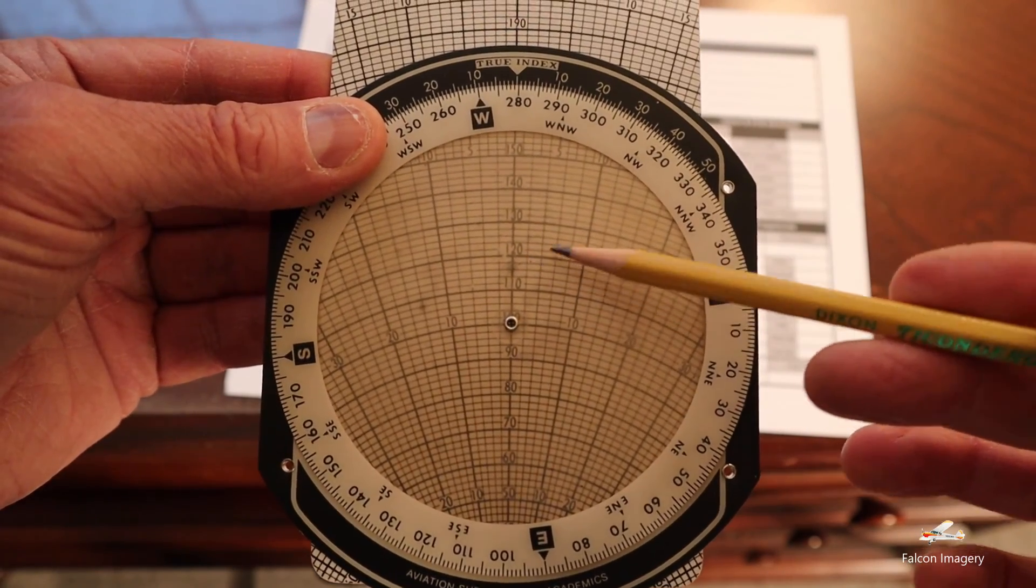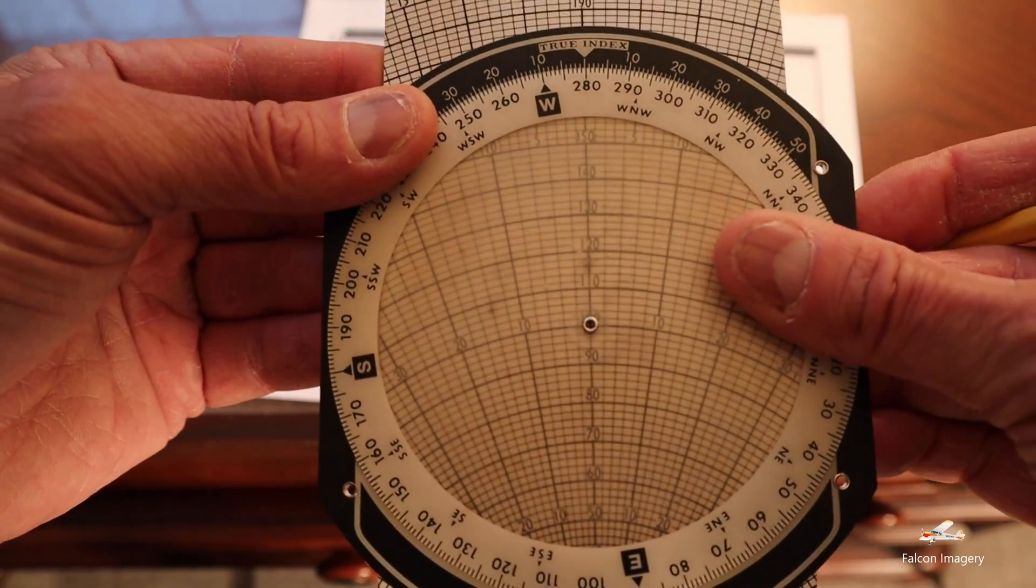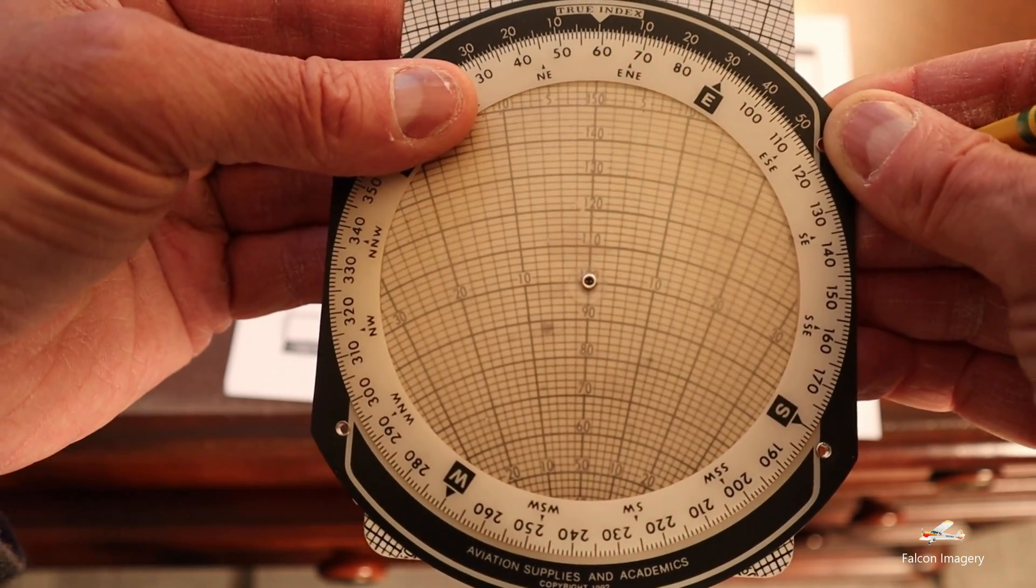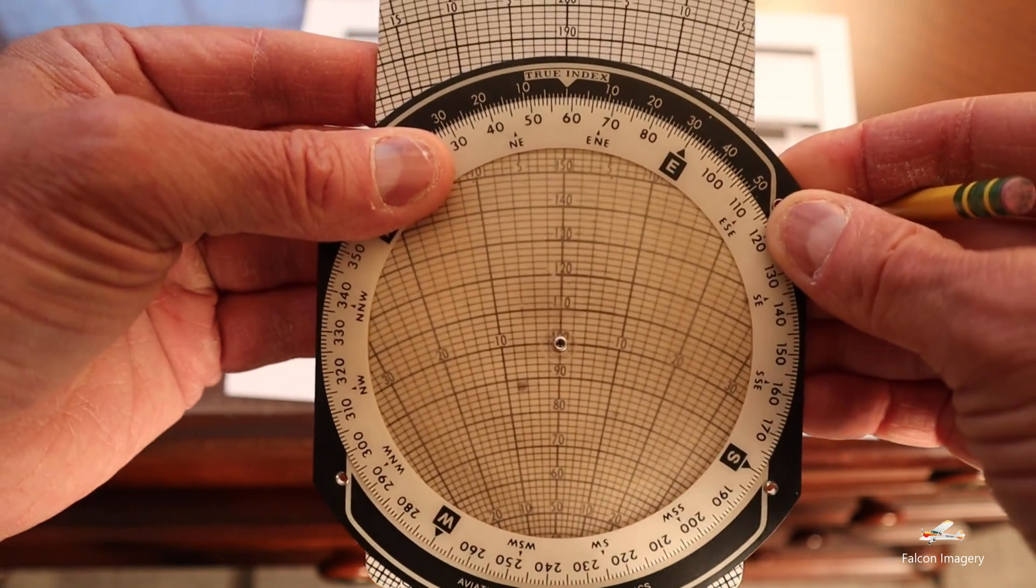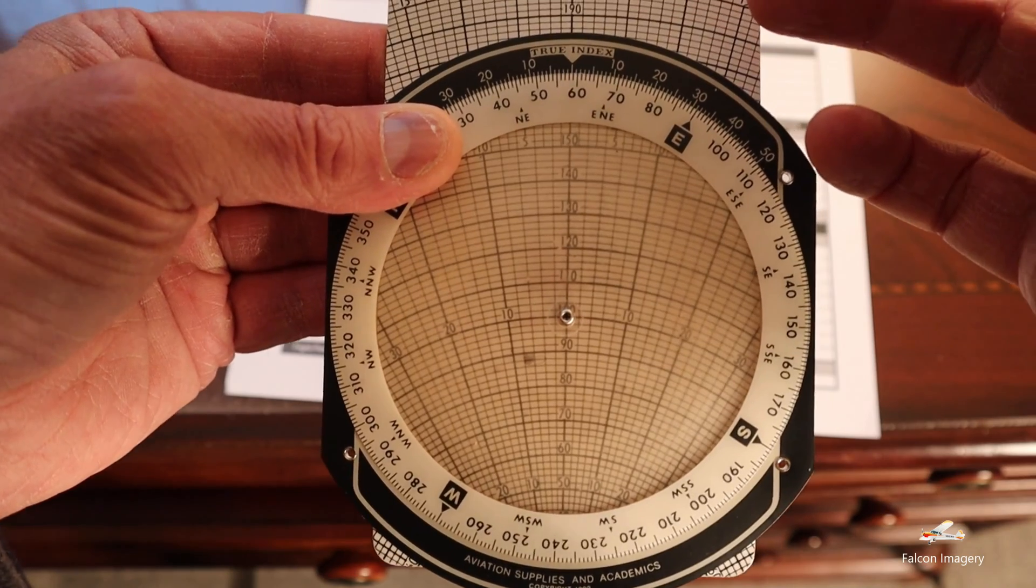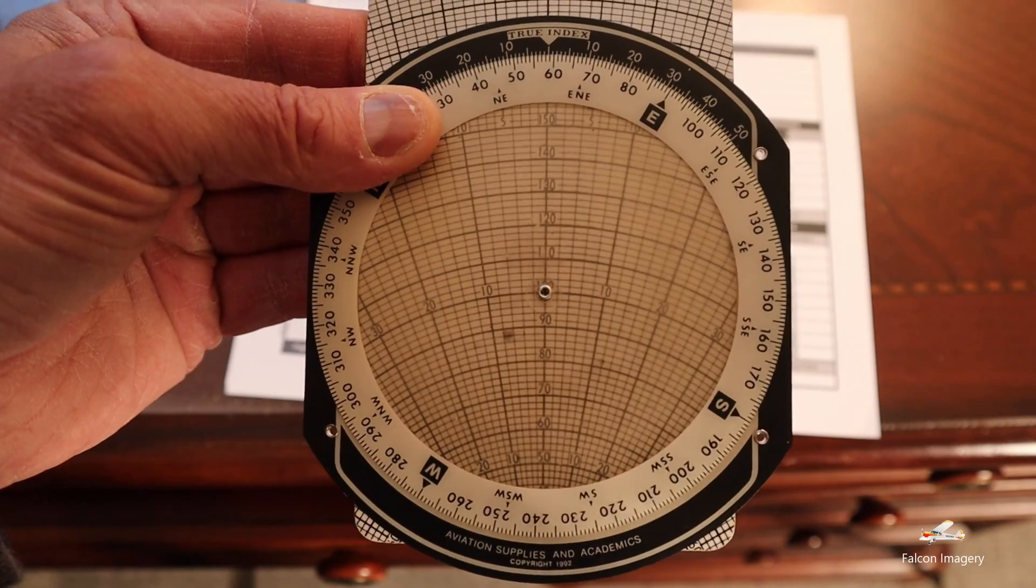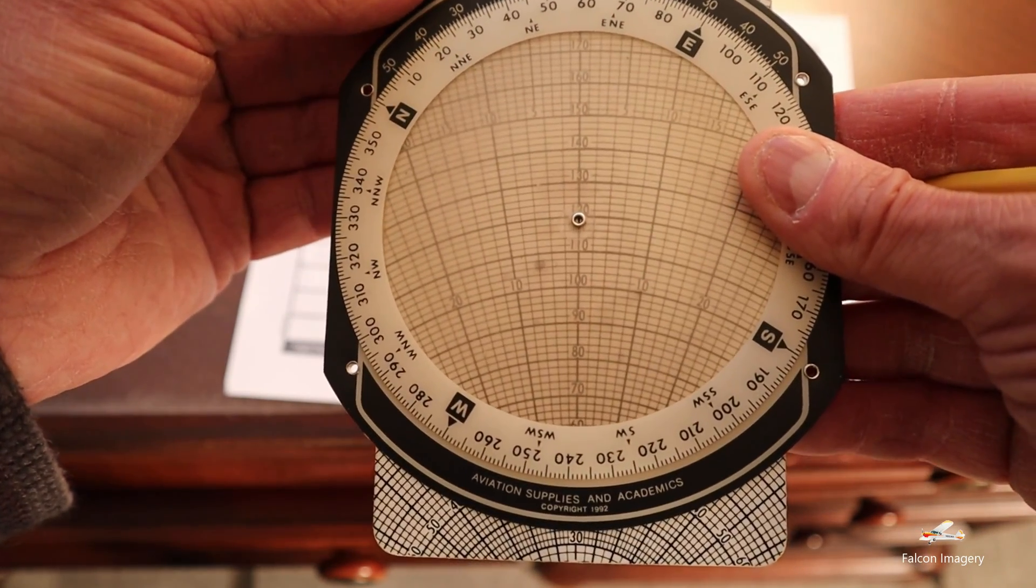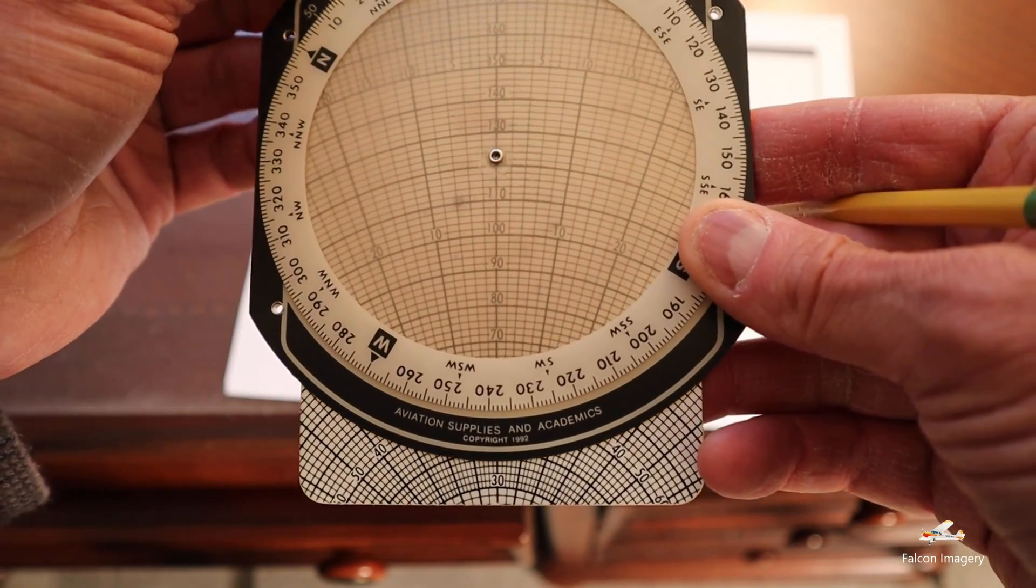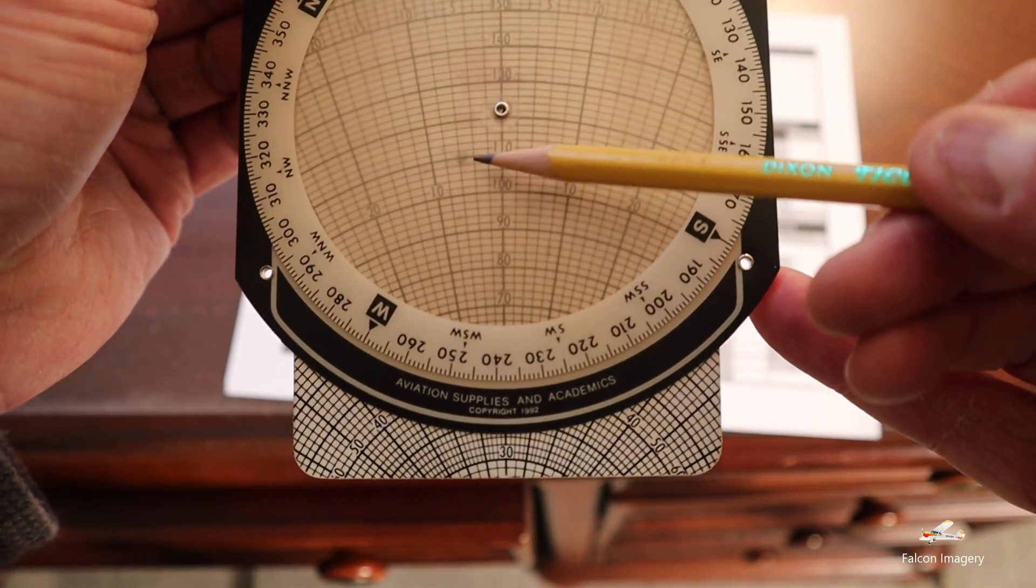All right, now that I've established my mark, the next instruction is set the true course under the true index. The true course here is 59 degrees. And there it is, there's my 59 degrees. And the next requirement is slide the wind velocity mark that we made to the true airspeed. Well, the true airspeed we said was 110 knots at our cruise. So we have our mark at the 110 knot line here on the whiz wheel.